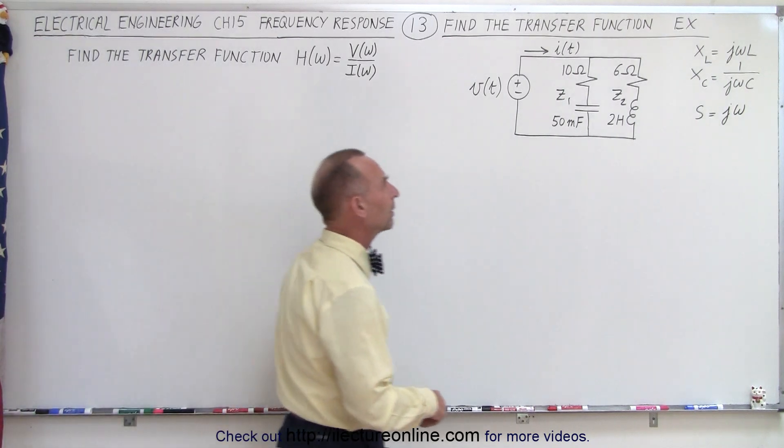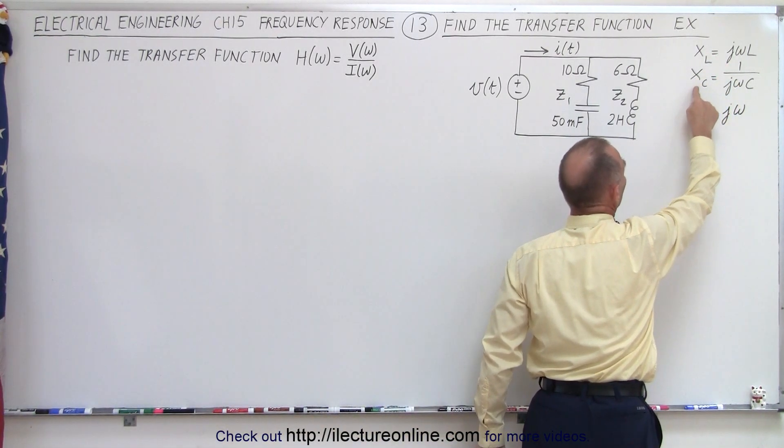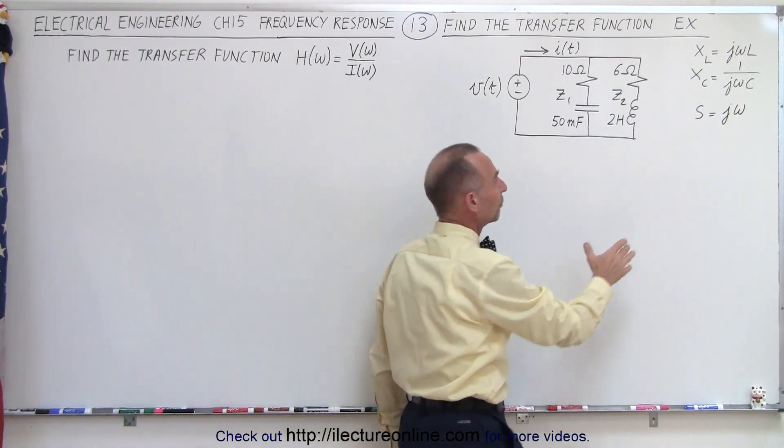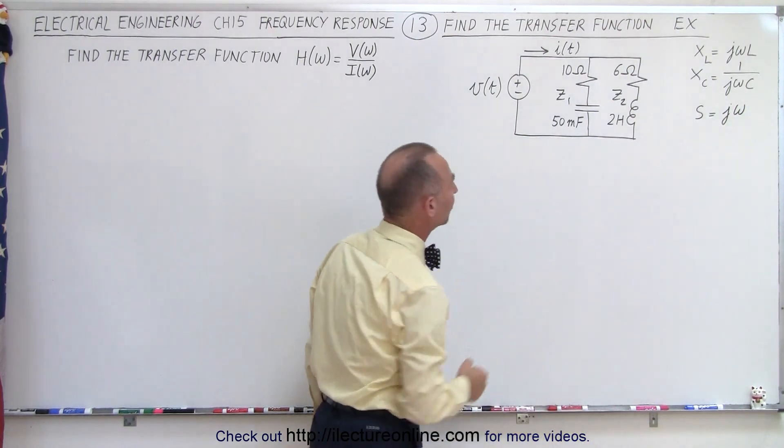We need to keep in mind that the reactance for the inductor is J omega L and the reactance for the capacitor is 1 over J omega C. And then, of course, the conversion from S equals J omega. But here we have a simple circuit.